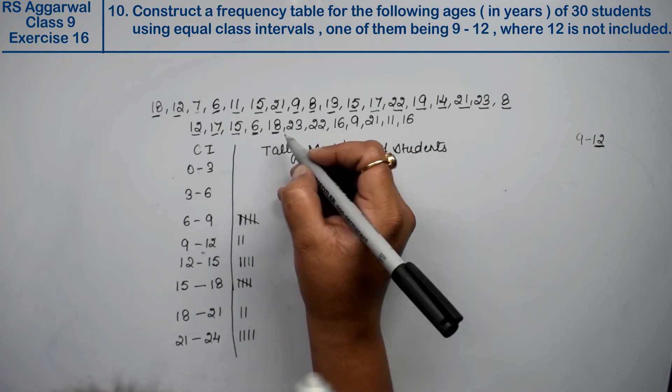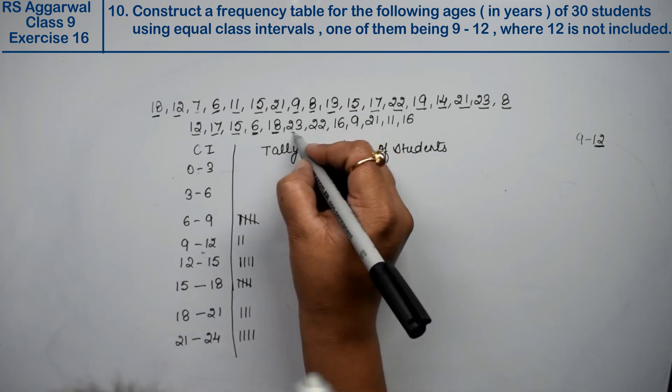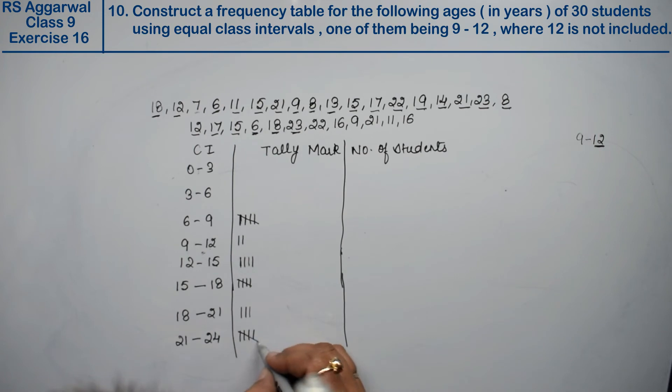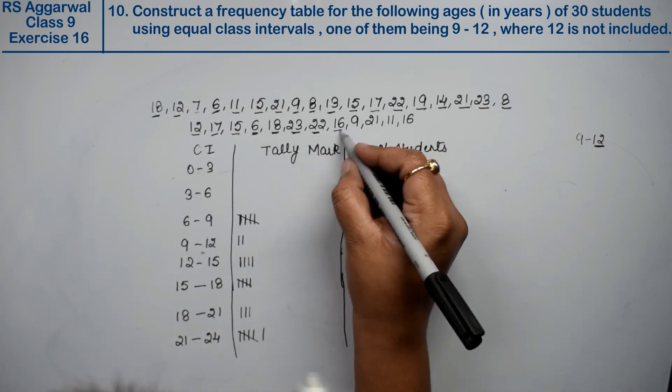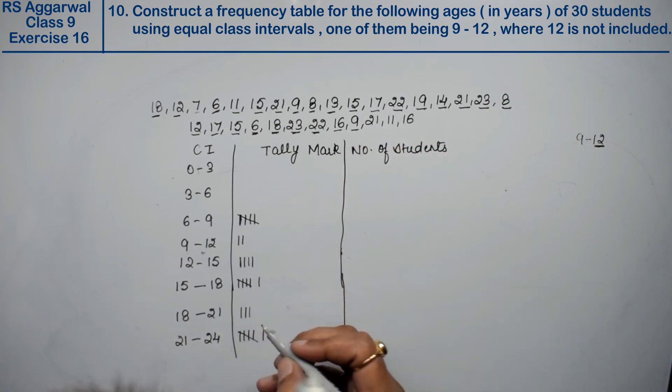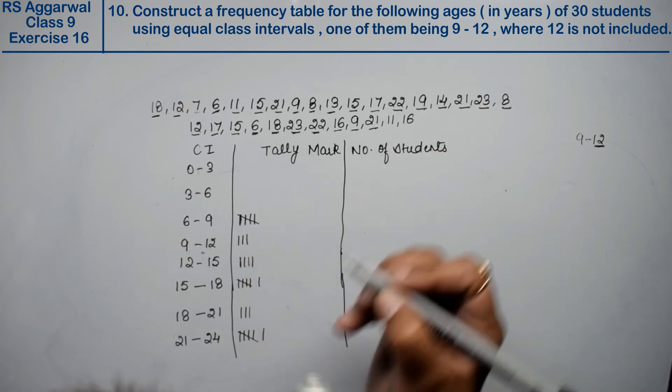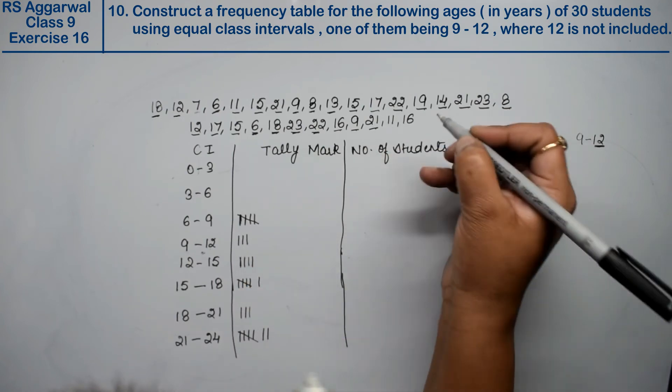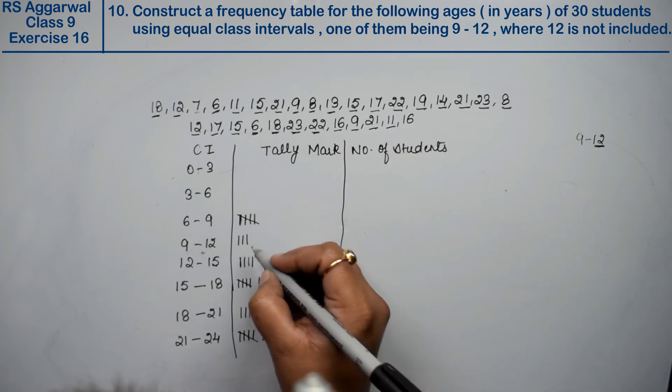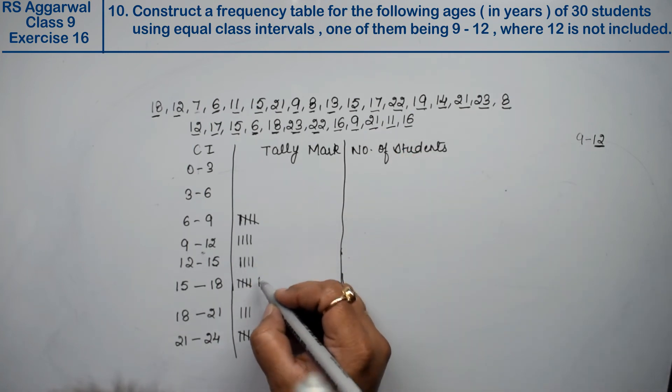18 goes in 18 to 21. 23 goes in 21 to 24. 22 goes in 21 to 24. 16 goes in 15 to 18. 9 goes in 9 to 12. 21 goes in 21 to 24. 11 goes in 9 to 12, and 16 goes in 15 to 18.